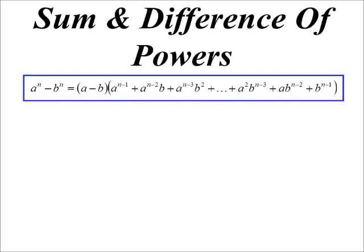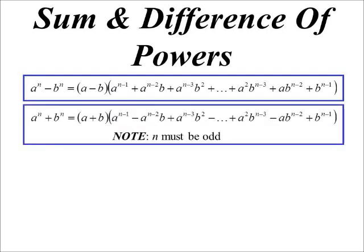But you'll notice that's just for difference. Sum, it will start with a plus b, and then the second one it alternates plus minus, plus minus, plus minus, and so on. However, you can only do a sum if it's an odd power. You don't have a nice neat one like this for sum of two squares, for instance.